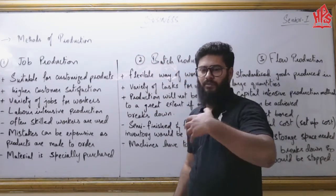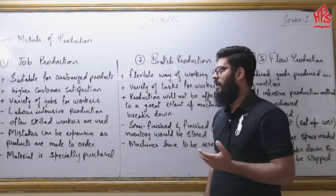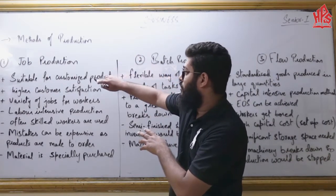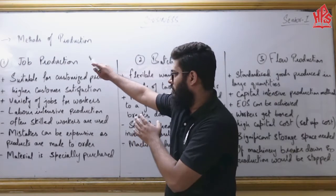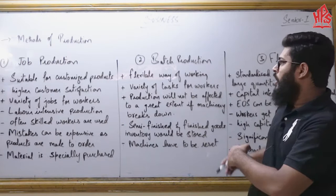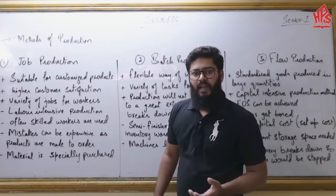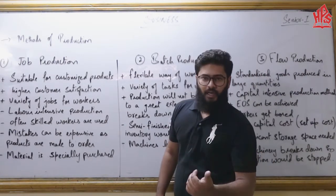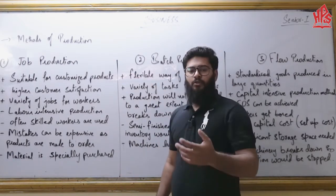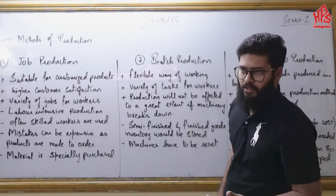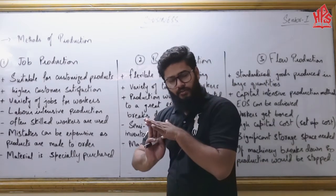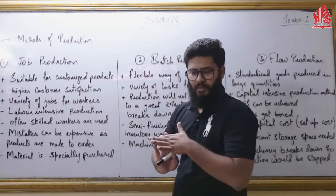The next topic we are going to study is methods of production. A common mistake students make in exam questions on methods of production is that instead of focusing on the three methods — job production, batch production, and flow production — they also write lean production or cell production as methods of production, and end up scoring no marks. So to be clear, we have three methods of production for a business.